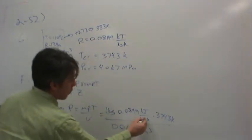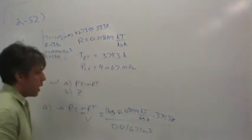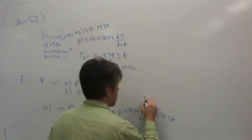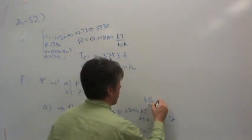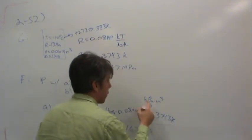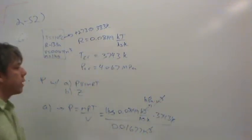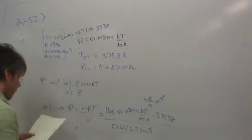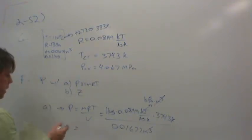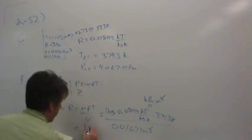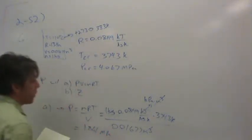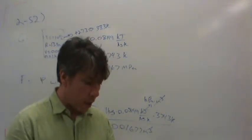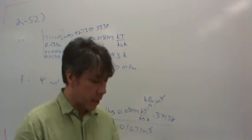Let's check our units. Kilograms cancel, Kelvin cancels, and we're left with kilojoules per cubic meter. Since a kilojoule equals a kilopascal times a cubic meter, the cubic meters cancel and we're left with pressure in kilopascals. Plugging it all in, the result is 1.861 megapascals.